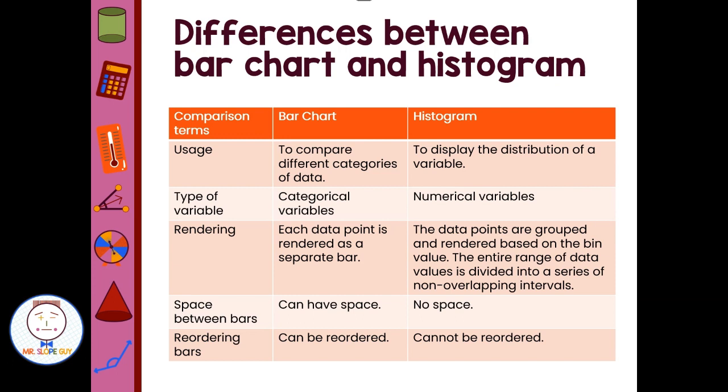So a histogram, you're putting things into bins or categories of certain numbers, like one to five, six to ten, ten to fifteen, things like that. So you have these bin systems we put things into, as opposed to a bar graph that just puts things as a separate bar.